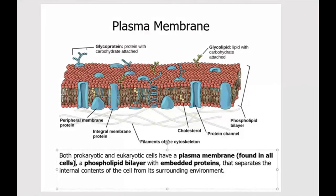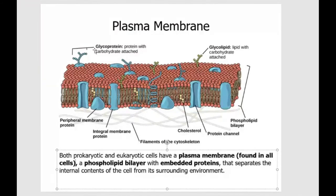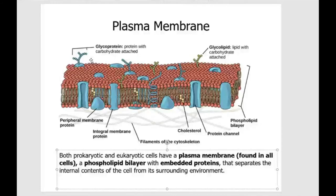In the cell membrane backbone, you're going to have proteins embedded or spanning through the phospholipid bilayer. Some of the proteins may have other things attached to them — for example, glycolipid, which is lipid with carbohydrate attached to it, and glycoprotein, which is protein with carbohydrate attached to it. A lot of times these components — glycolipids and glycoproteins — serve as cell surface markers, which helps other cells identify different cells, whether they are self cells or foreign invaders.